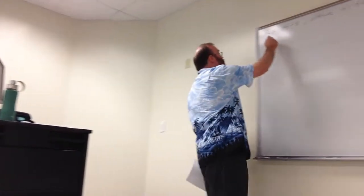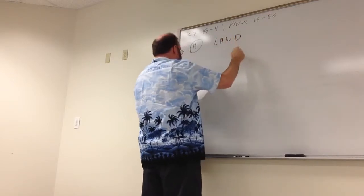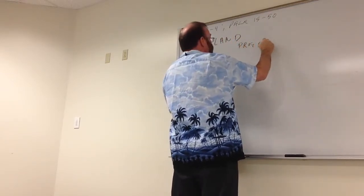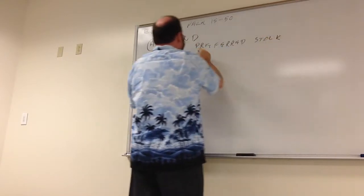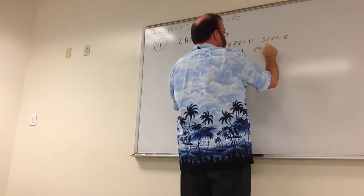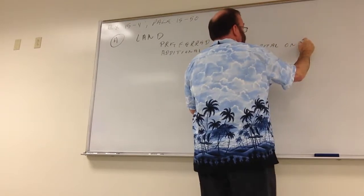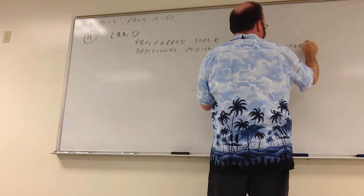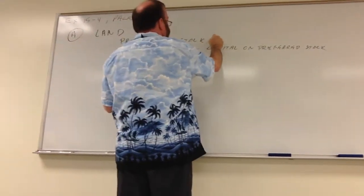The first situation is the preferred stock is currently selling for $120 per share and no appraisal is available on the land. So in all cases we're going to debit land and credit preferred stock and additional paid-in capital on preferred stock.